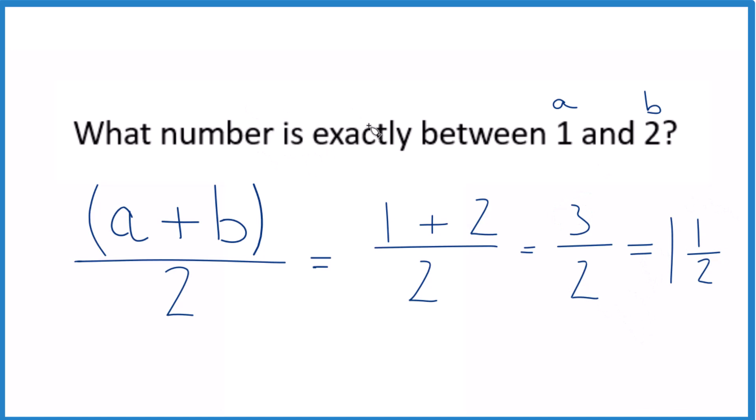That's it, though. That's how you find out what number is exactly between 1 and 2. This method is nice because it's more general. You can use it on any numbers, and you don't have the problem of the number line being too small or too large.